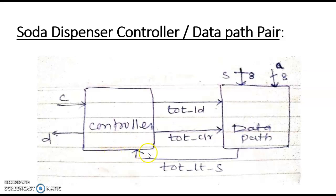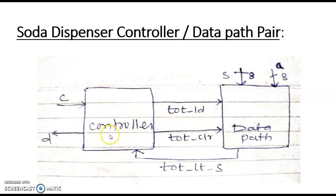Hello all. In the last video we have seen the cell controller and the datapath component and how to join them. Now, C is the input to the controller, and TOT_LTS is also an input to the controller. This signal is nothing but a comparator output.